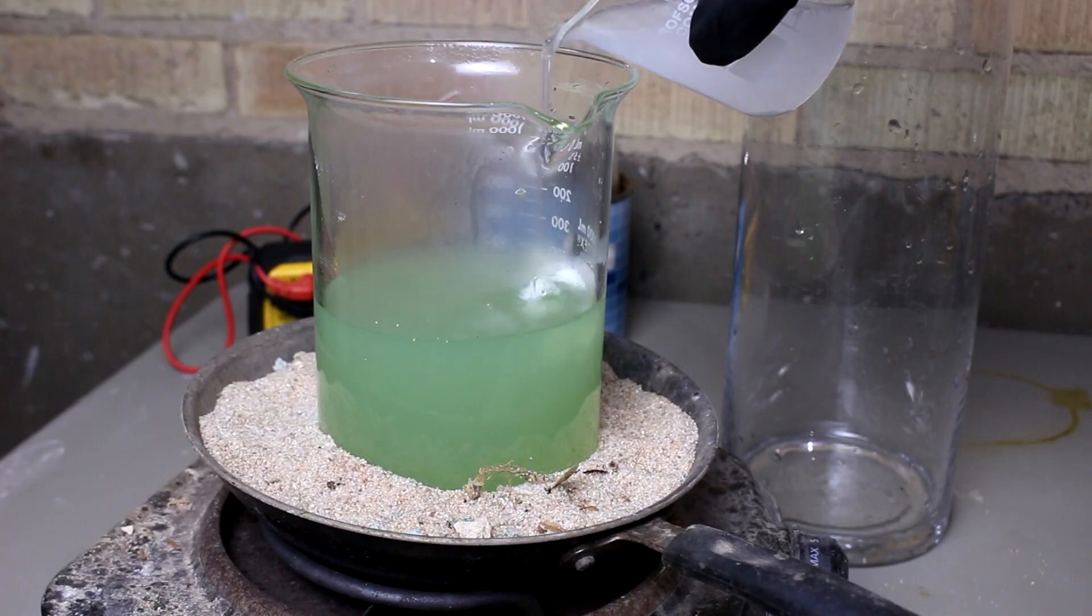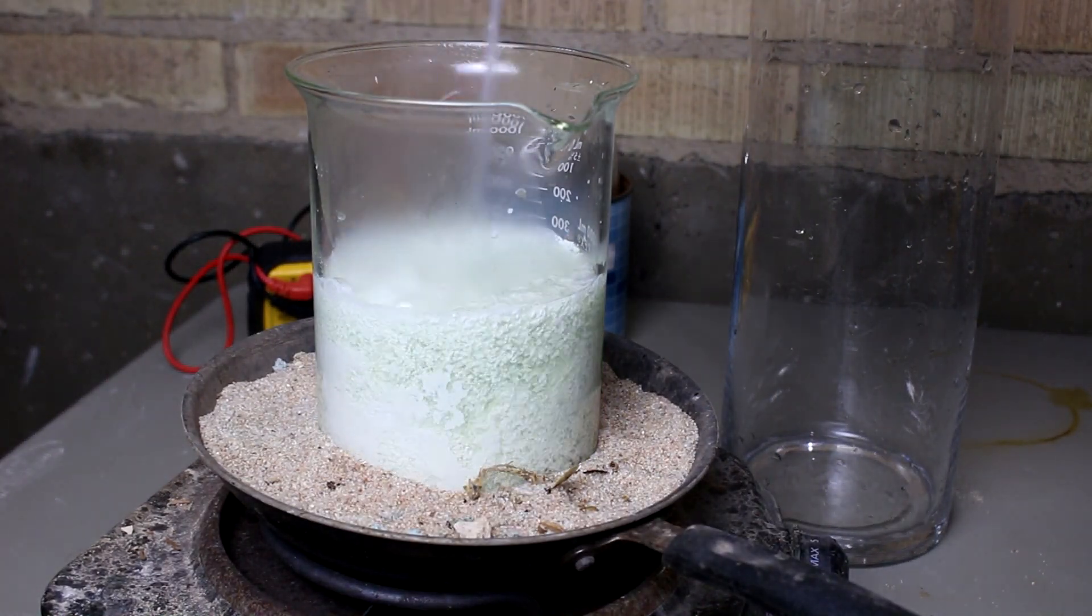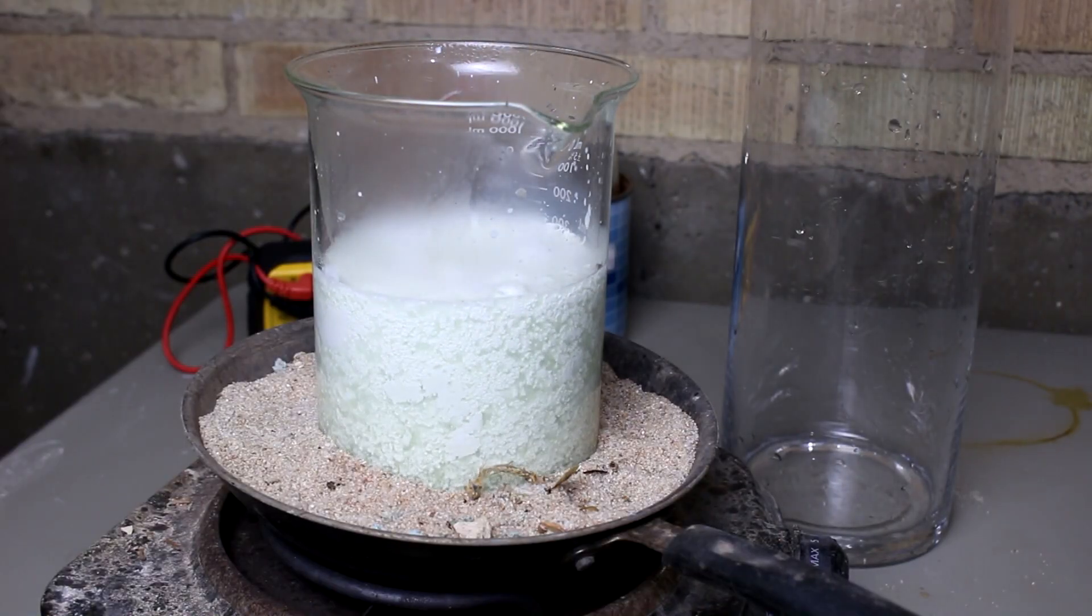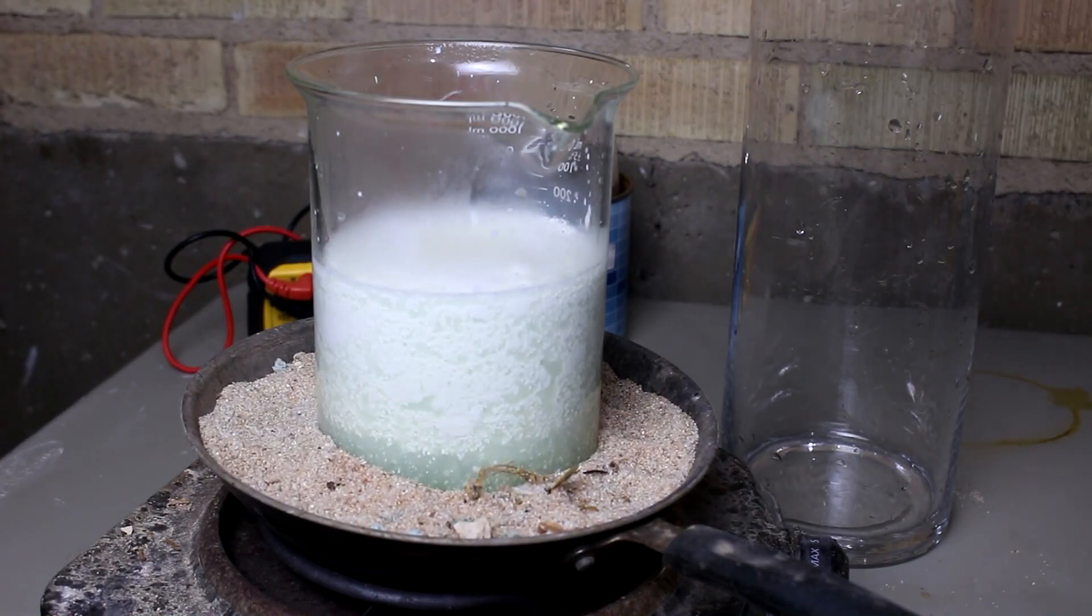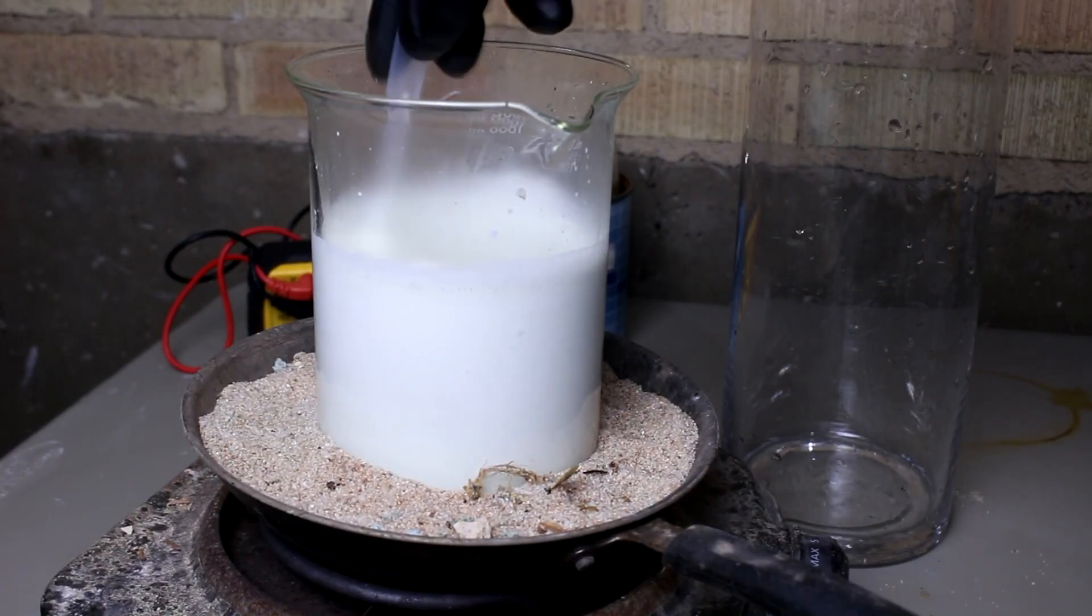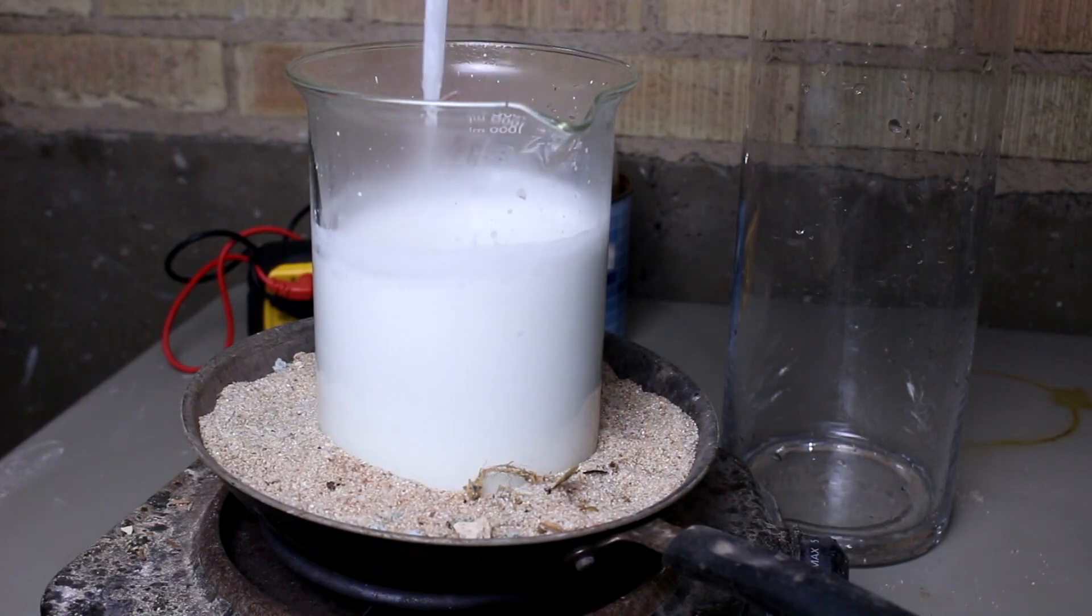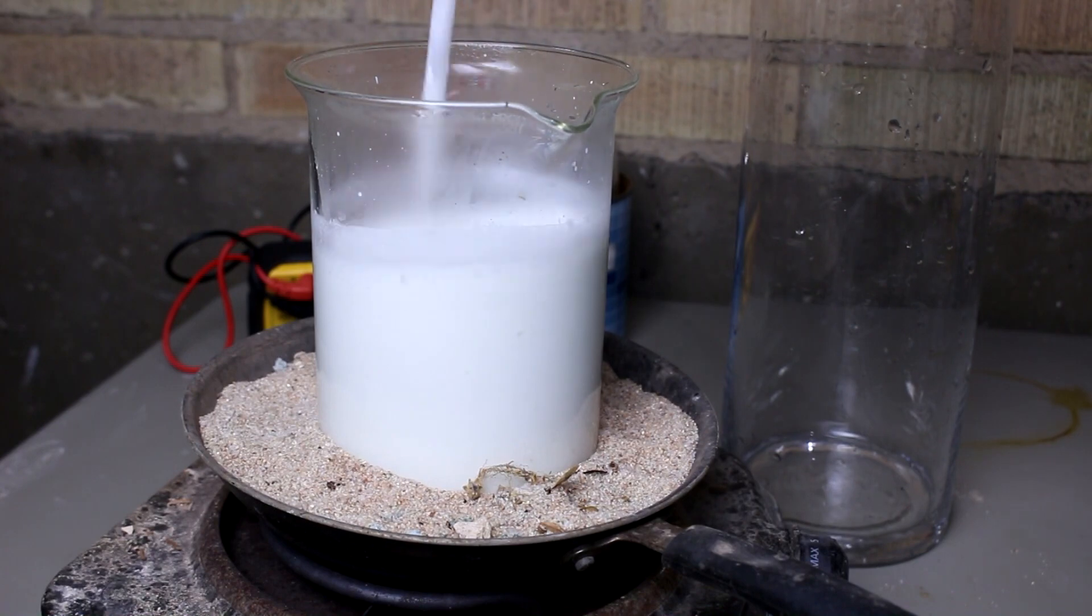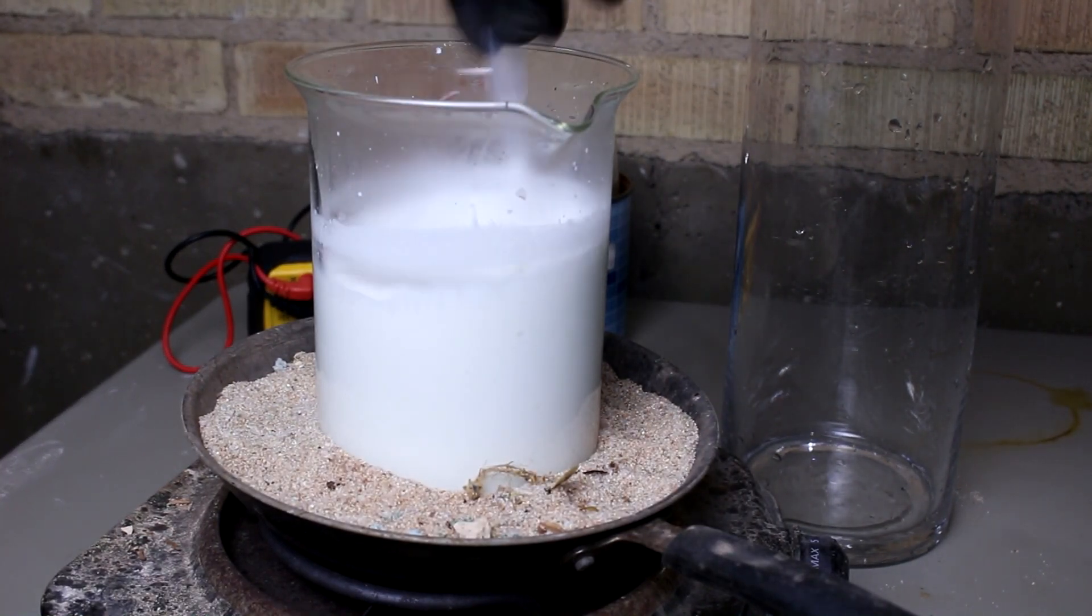Now when I react this, it should form a white precipitant which is silver chloride and mercury one chloride. Both of which are insoluble. The lead also forms an insoluble chloride. But as long as I keep the solution hot, most of the lead should stay in the solution. We can wash this with large amounts of water just to make sure to remove as much of the lead as we can.